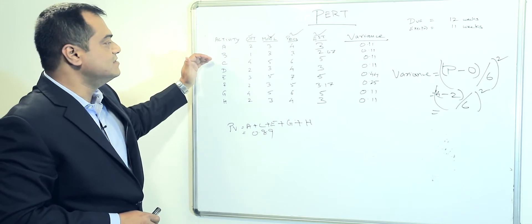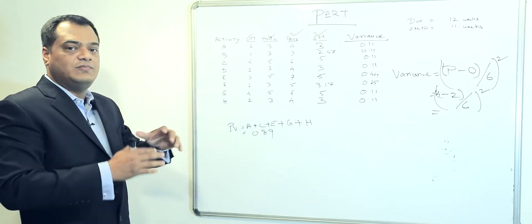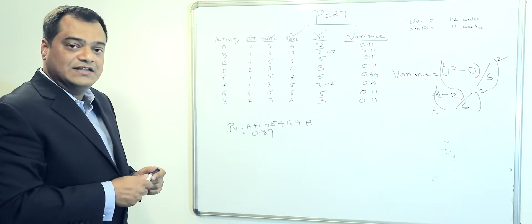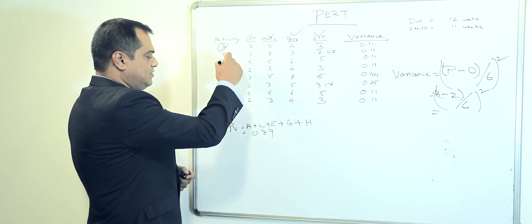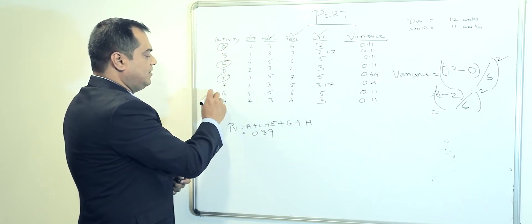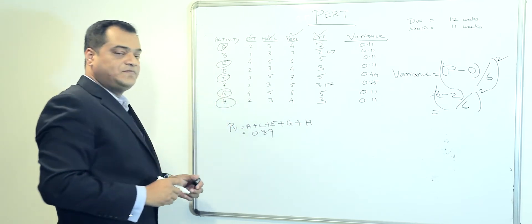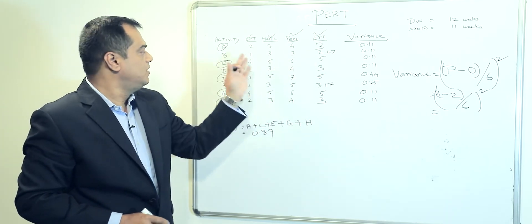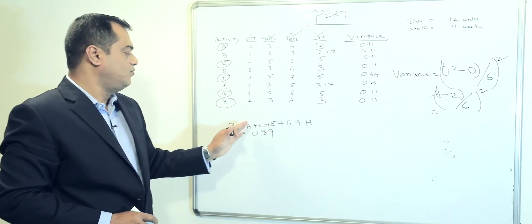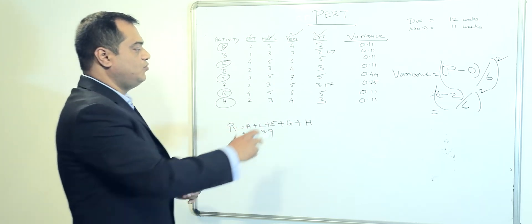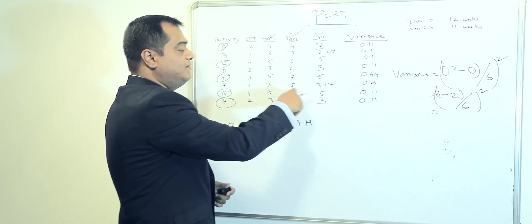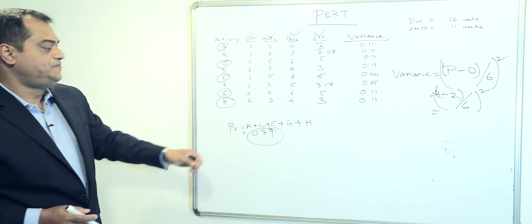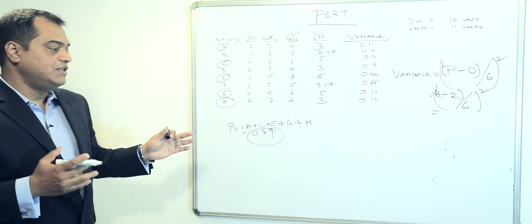Once we have individual variances, we want to find the overall project variance. The critical path in this case is A, C, E, G, and H. We plot the variances of all critical path tasks and combine them together — 0.11 plus 0.11 and so on — giving us a project variance of 0.89.